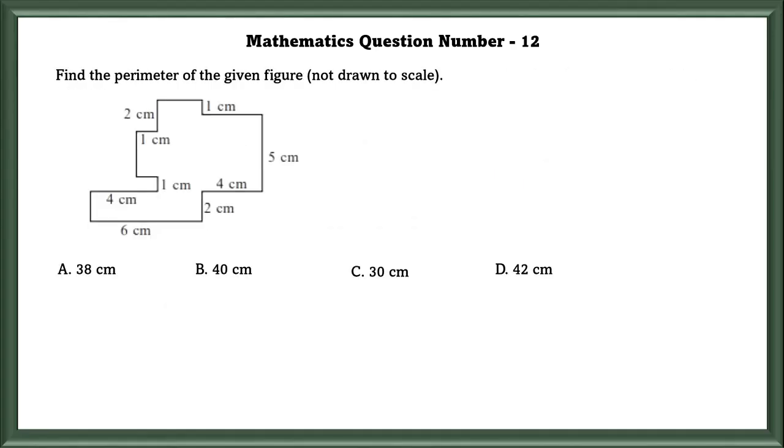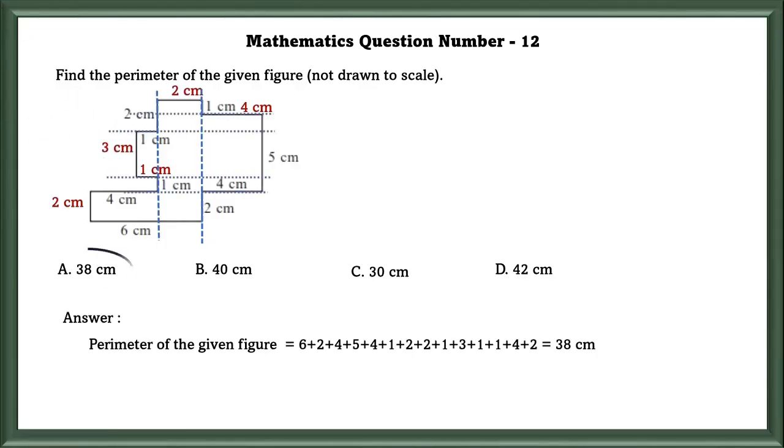Mathematics Question No. 12: Find the perimeter of the given figure. First, we will measure the missing parts. If we add all this, we get 38 cm.